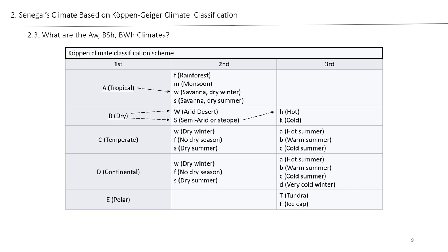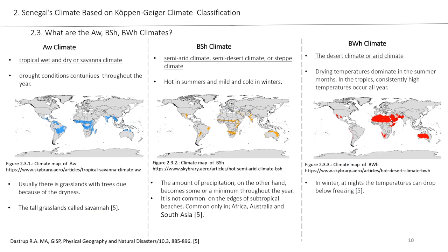The AW climate is defined as a tropical wet and dry climate, also called savanna climate. In countries with this climate, drought conditions continue through the year and there are generally wooded grasslands. The vegetation consists of long grasslands called savanna. The BSH climate type is defined as semi-arid, semi-desert, or steppe climate. Summers are hot, winters are warm to cold, and the amount of precipitation is minimal through the year. It is found in Africa, Australia, and South Asia.